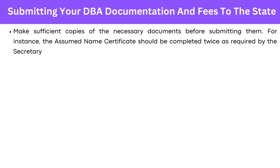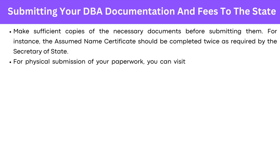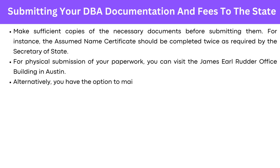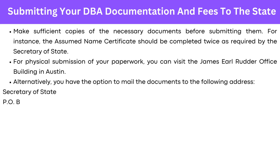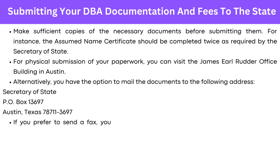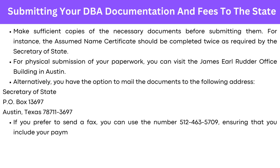For physical submission of your paperwork, you can visit the James L. Ruder office building in Austin. Alternatively, you have the option to mail the documents to the following address: Secretary of State, PO Box 13697, Austin, Texas 78711-3697. If you prefer to send a fax, you can use the number 512-463-5709, ensuring that you include your payment form.